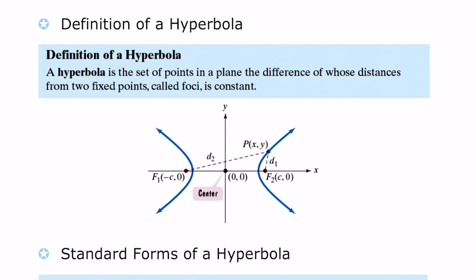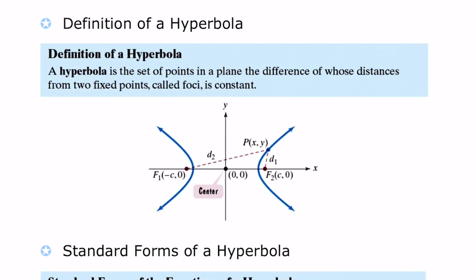Here we are in 9.2 precalculus talking about conic sections. The second conic section we're going to address is the hyperbola. The hyperbola has a definition at the top of your screen, and the graph below is very helpful. We see that we have a center — even though it's not contained inside our curves, it's between them — and we still have foci, one inside each curve.